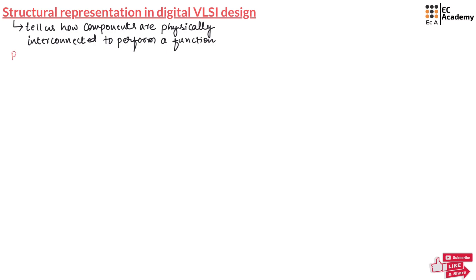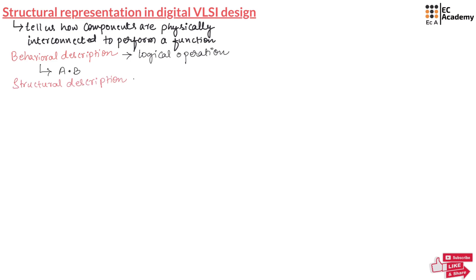In the previous video, we understood about behavioral description, which focused on logical operations like AND, OR, and NOT without worrying about physical structure. For example, the behavioral description may say A AND B, but structural description describes how the components are connected — for example, how the transistors are connected to perform A AND B.